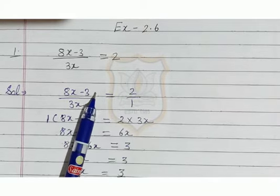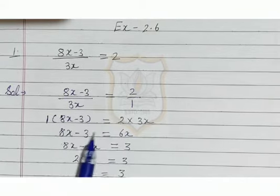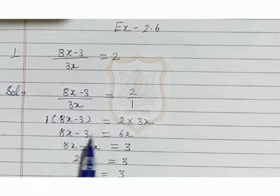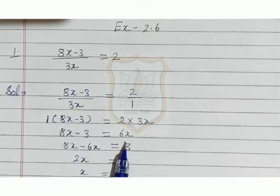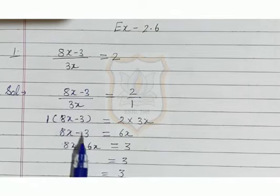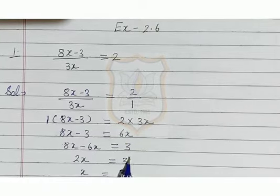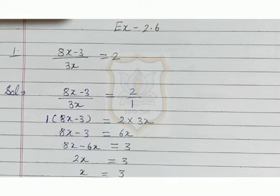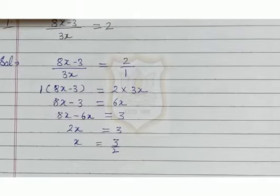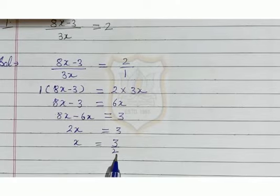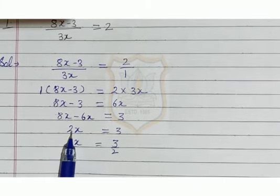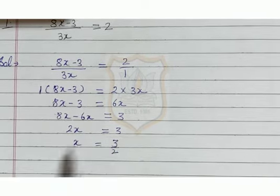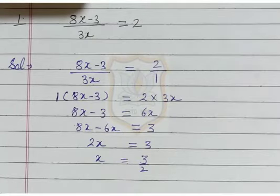Cross multiplication means that we multiply them by cross. Then we get 8x minus 3 equal to 6x. We shift 6x from the right hand side to the left hand side, and shift minus 3 from the left hand side to the right hand side. So we get 8x minus 6x equals 3, that is 2x equals 3. So x equals 3 upon 2. In this sum we used the transposition method and cross multiplication method.